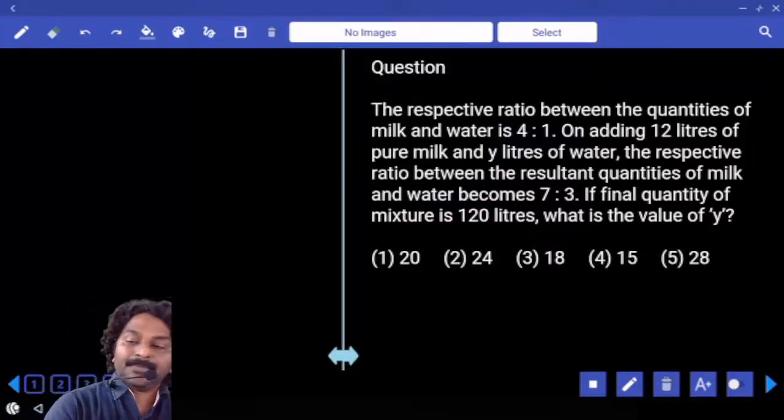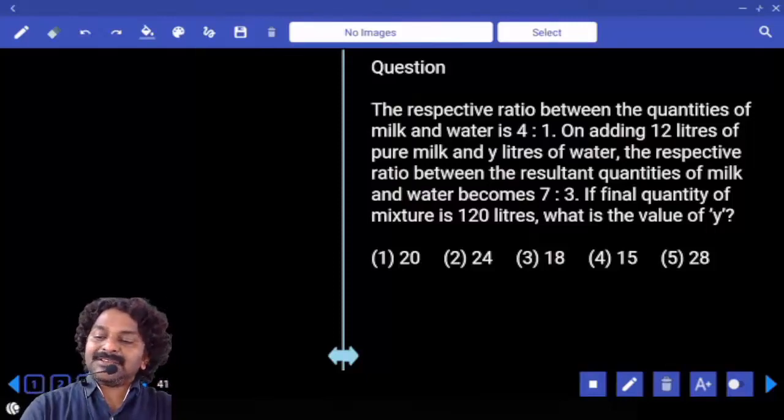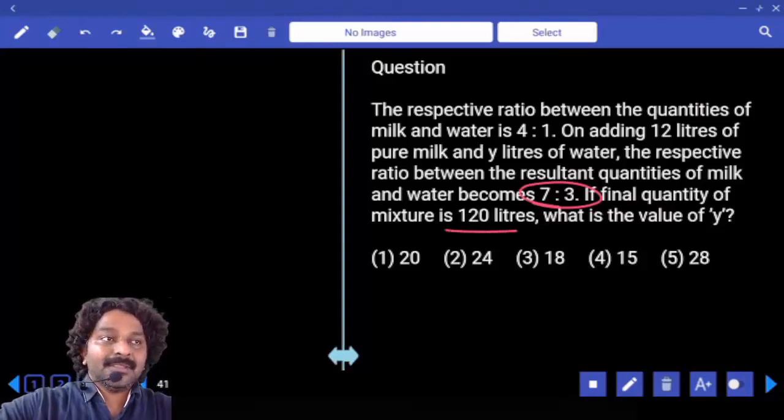Right. Come on. So finally, what is the ratio between milk and water? And what is final quantity? That means 10 parts is equal to 120 liters.